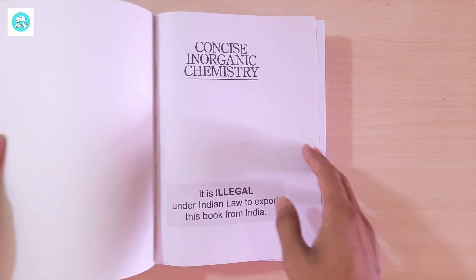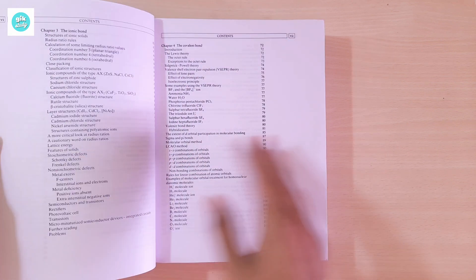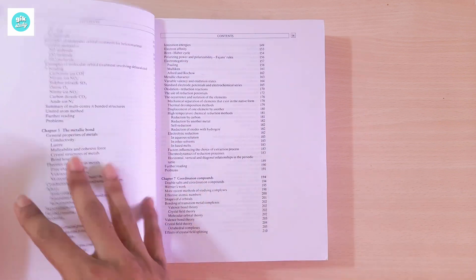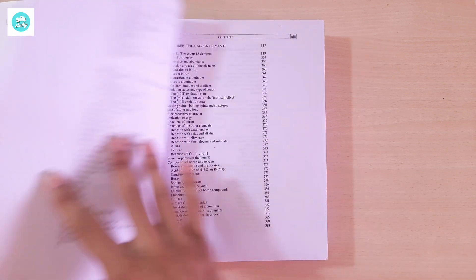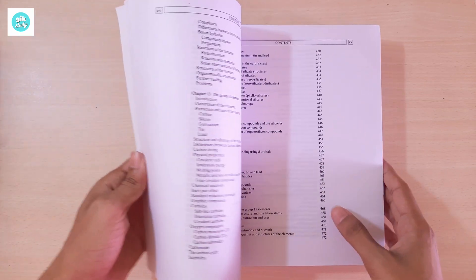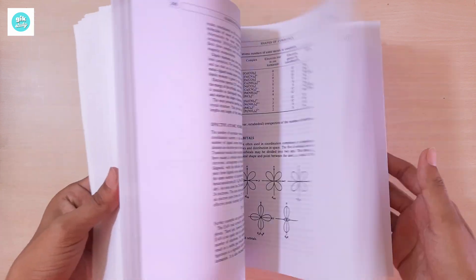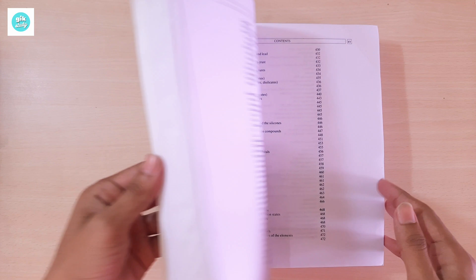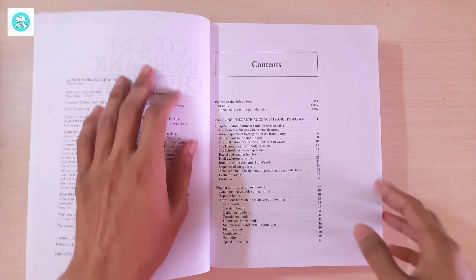You know that J.D. Lee is one of the most interesting and advanced inorganic chemistry books for JEE aspirants. So if you are a JEE aspirant, then this book is going to help you a lot. Here's the book, let's see.